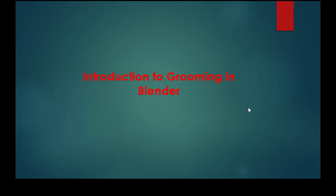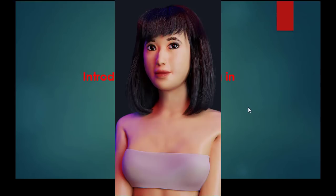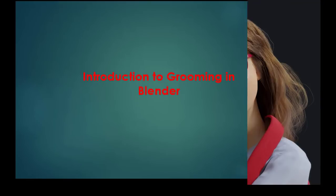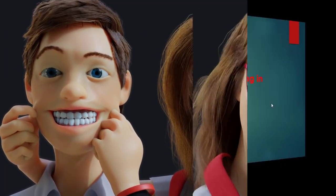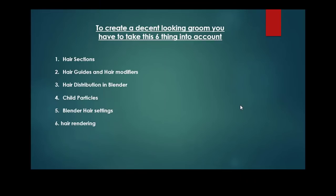Grooming is basically adding hair to your characters — you can add hair to objects. If this is your first time trying to use it, I've analyzed and laid down six steps which will help you create decent looking grooms in your scenes. The steps are: hair sections, hair guides and hair modifiers, hair distribution, child particles, hair settings, and finally hair rendering inside Blender. If you stick with this tutorial to the end, I assure you you're going to get something out of it.